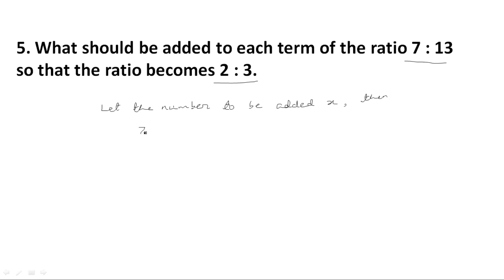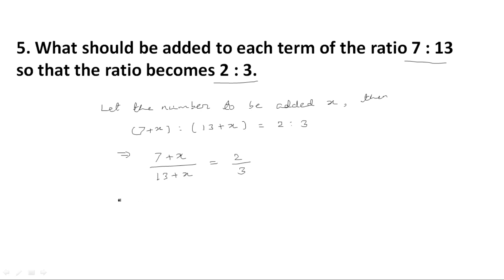Then, 7 plus x is to 13 plus x is equal to 2 is to 3. This implies 7 plus x divided by 13 plus x is equal to 2 upon 3. We will do cross multiplication: 7 multiplied by 3 gives 21 plus 3x, and 13 multiplied by 2 gives 26 plus 2x.